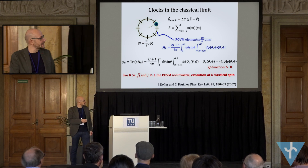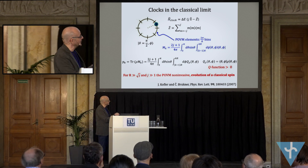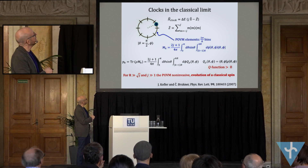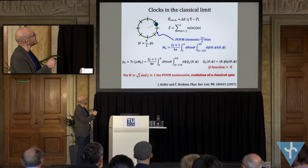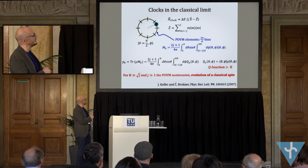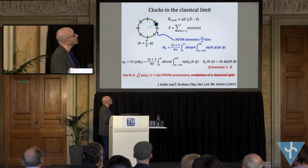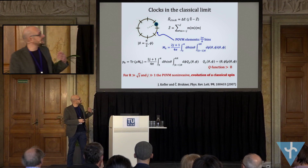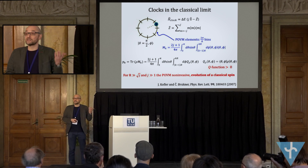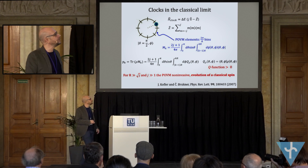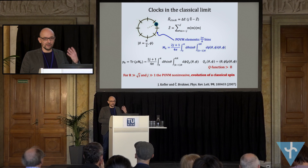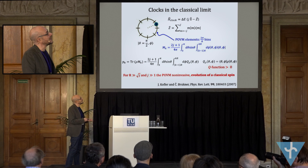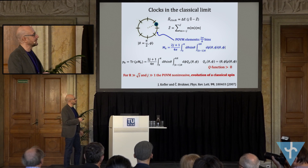It turns out — and this is something we showed together with Koffler a long time ago — that if the bin width is much larger than the typical uncertainty of the spin coherent state, then for large spins what we read out is a classical notion of clock: reading out the clock does not disturb the evolution, the clock continues to evolve undisturbed, and the reading is deterministic. That's a classical notion of clock coming out of quantum formalism.